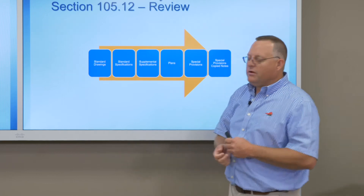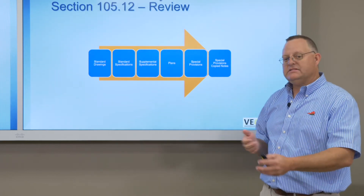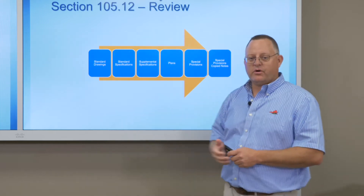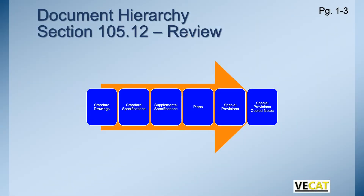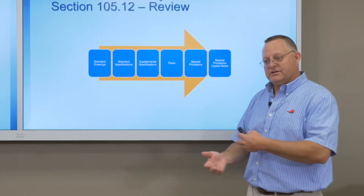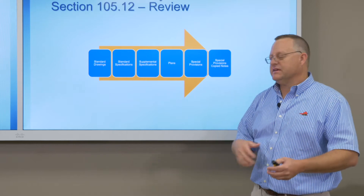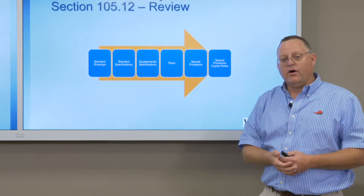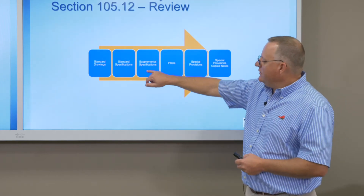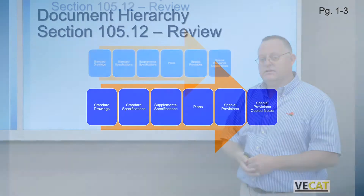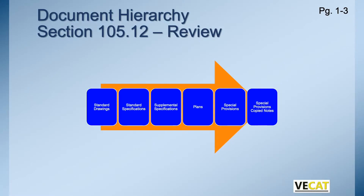Section 512 of the spec book tells you what's important from least to most. Least important is your standard drawings — not very common for maintenance overlay projects. We do have standard specs in our spec book; section 300 has several sections dealing with types of overlays and treatments. We use quite a few supplemental specifications, and those are embedded in your document — supplemental language always trumps a standard spec.